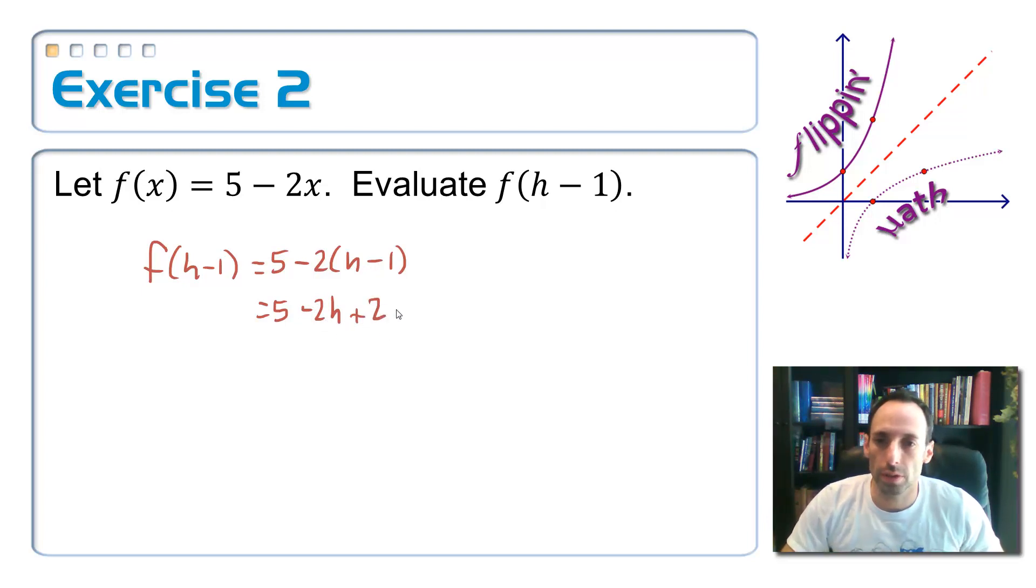And then simplifying here, I get seven minus two h. And there's the answer. I just substituted in h minus one in for x. That's the substitution property.